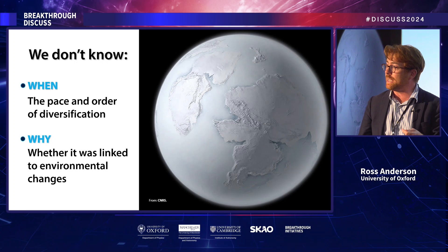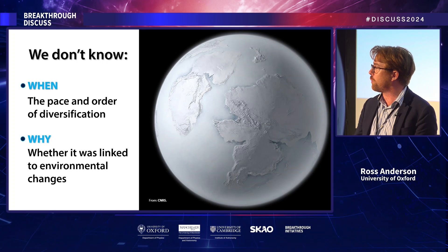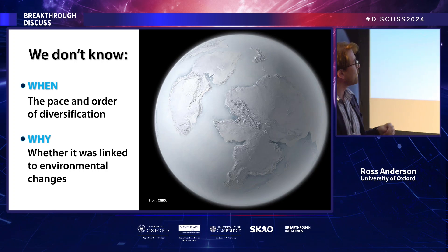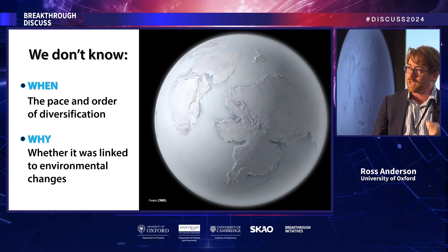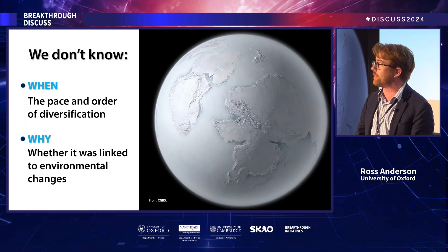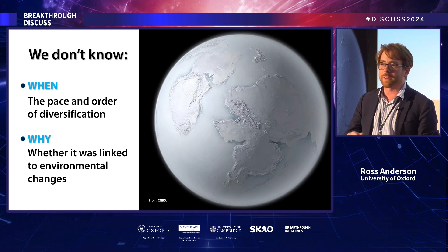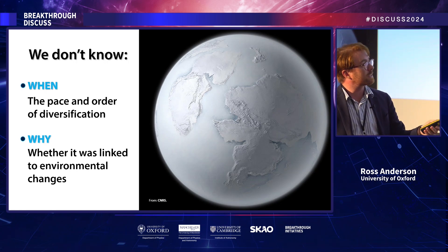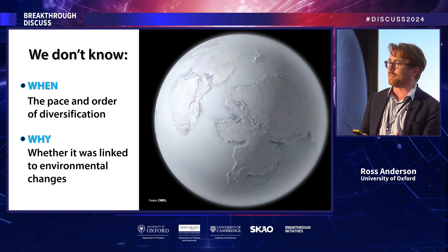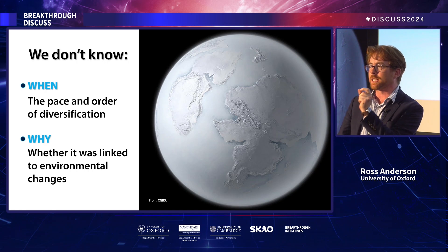We don't know the pace and the order in which eukaryotes diversified into major groups — we don't know the timescale. We don't know when red algae, green algae, or fungi first emerged. And because we don't have a robust timescale, we also find it really difficult to make correlations to environmental changes. We can't say whether oxygen caused the rise of eukaryotes, or what influence big climatic events like snowball Earth had on this revolution.